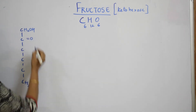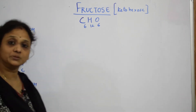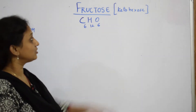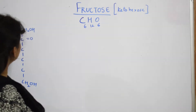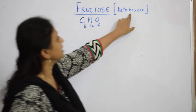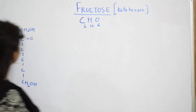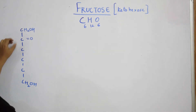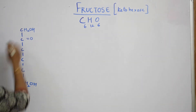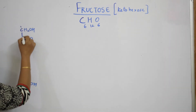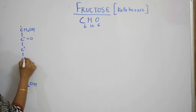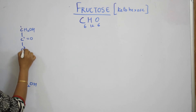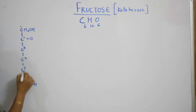Your second carbon has a ketonic group — that is the reason we call it as keto. Ketohexose — hexose means six carbons: one, two, three, four, five, six. Let us number this: one, two, three, four, five and six. Ketohexose.